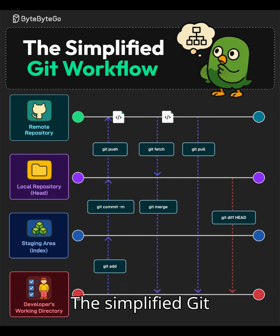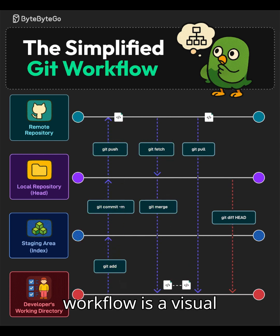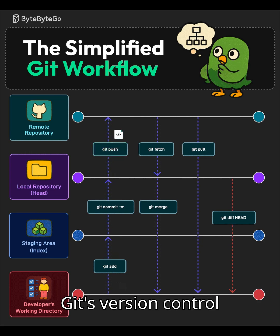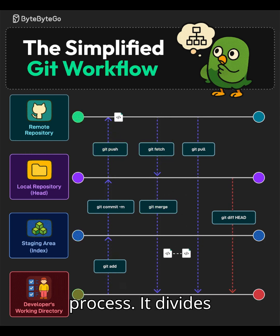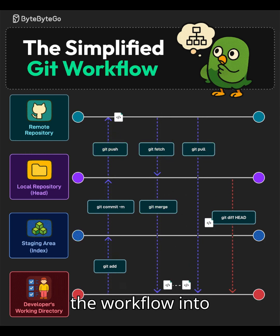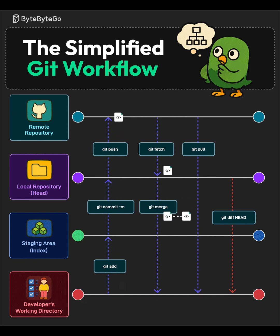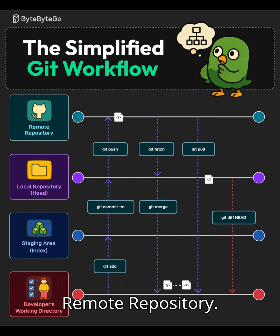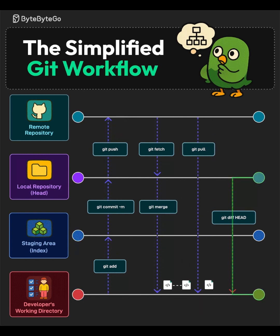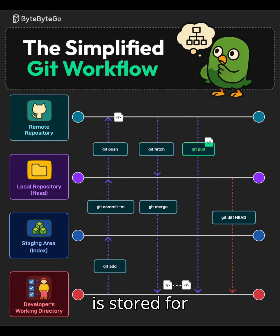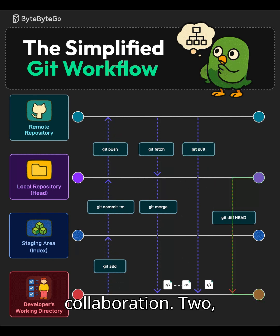The simplified Git workflow is a visual representation of Git's version control process. It divides the workflow into four main areas. The first is the Remote Repository, which is the central location where code is stored for collaboration.